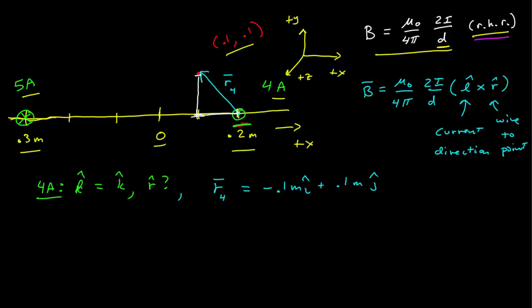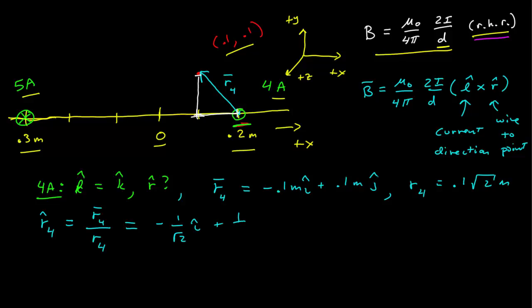Since the components are equal in magnitude, the magnitude of this vector is 0.1 times the square root of 2. Dividing the vector by its magnitude to get the unit vector, the 0.1s cancel and I get negative 1 over the square root of 2 i-hat plus 1 over the square root of 2 j-hat.